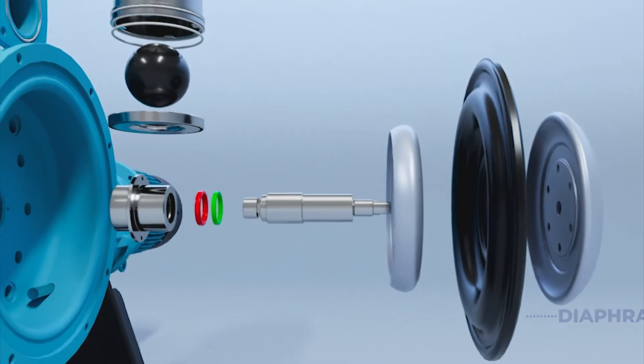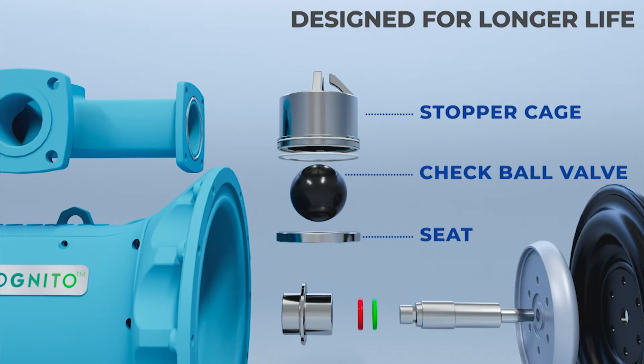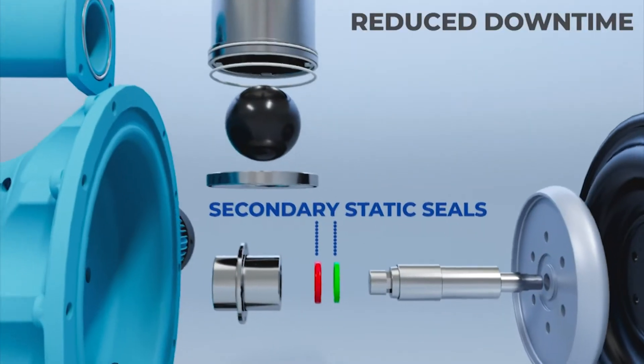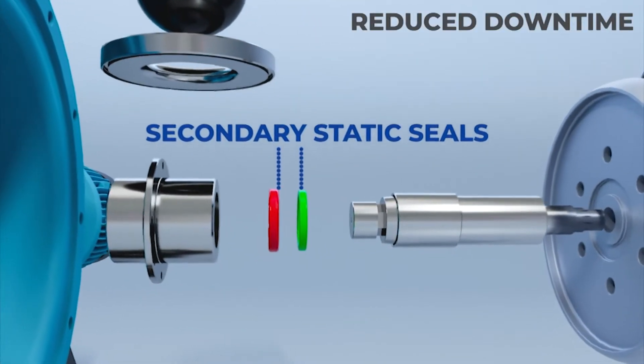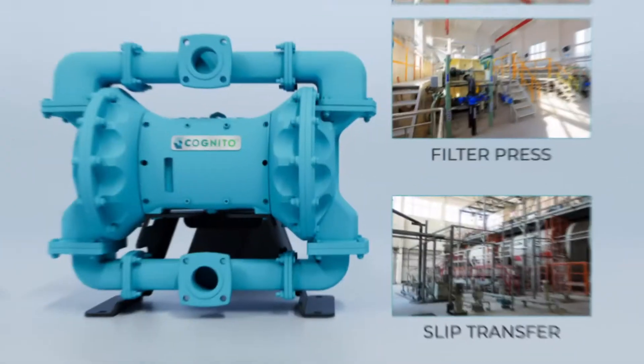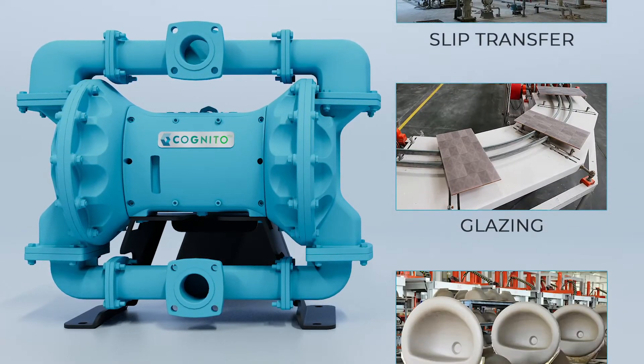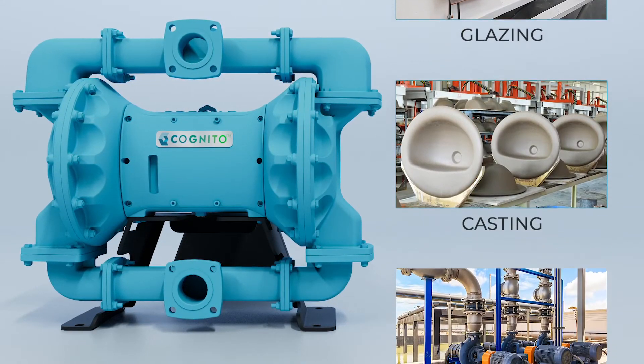The designed seat and stopper cage arrangement increase the life of manifolds and seats. Secondary static seats eliminate the direct contact with the fluid and this helps to protect the pump mechanism in case of diaphragm failure. It is most suitable for a wide range of viscous and abrasive fluids and can be used across multiple industries.